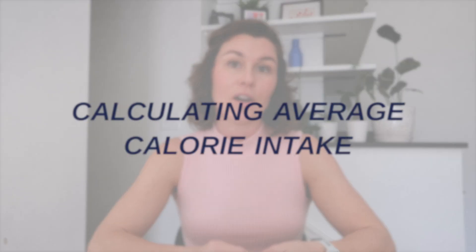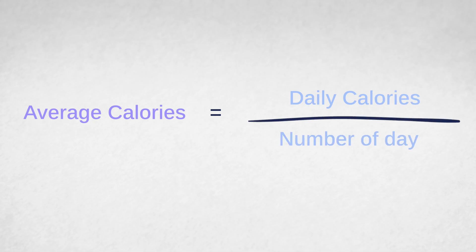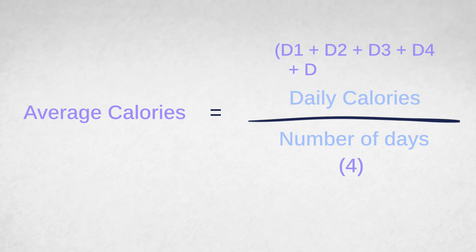Now that you've figured out your average weight, you can set that aside. Next, we're going to calculate your average calorie intake. To do that, take your daily calories, add them up, and divide by the number of days you tracked. If you tracked for four days, divide the total by four. If you tracked for seven days, divide by seven. I'm going to give you some simple numbers so you can follow along and calculate your own calories and macros.